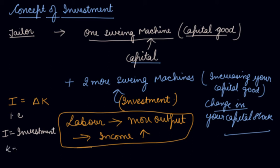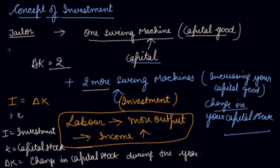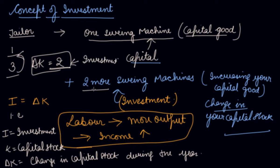I is your investment — the investment you have done in two machines. K is your capital stock. Change in K is the change in capital stock during the year. After six months you bought two more machines, so the change in capital is two: before there was one machine, now there are three machines, so the change in capital is two. This two is your investment. So investment is the process of capital formation, or the process of increase in the stock of capital.